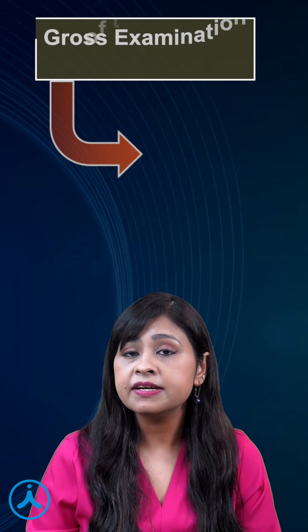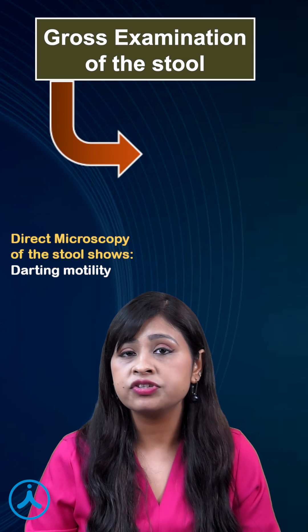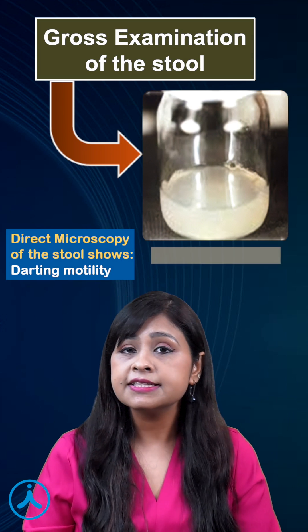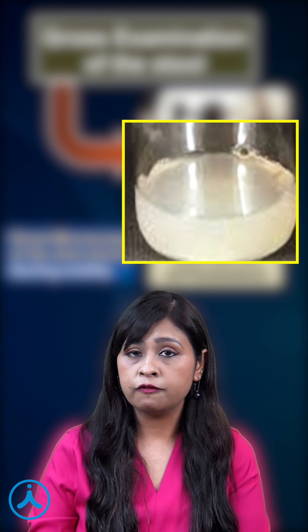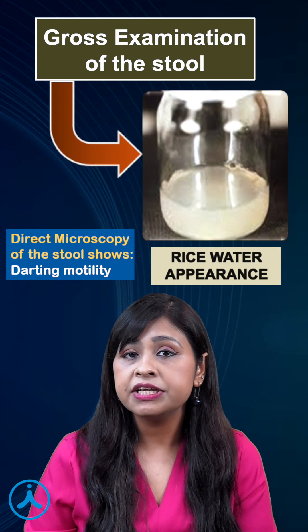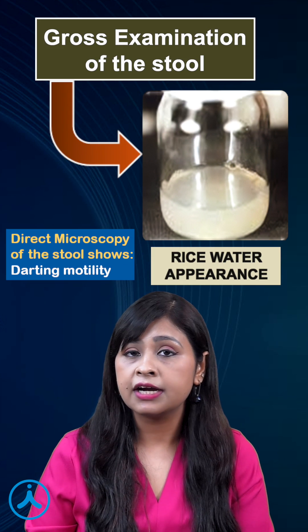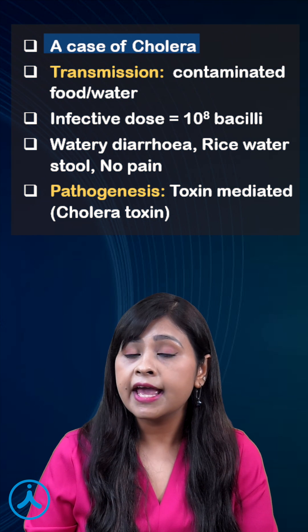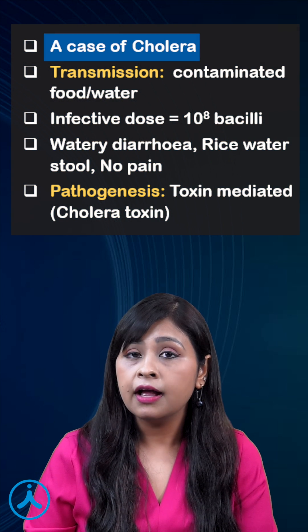The stool sample received in the laboratory looks like this. This is a rice water appearance of stool and on wet mount examination it shows darting motility. This is a case of cholera.